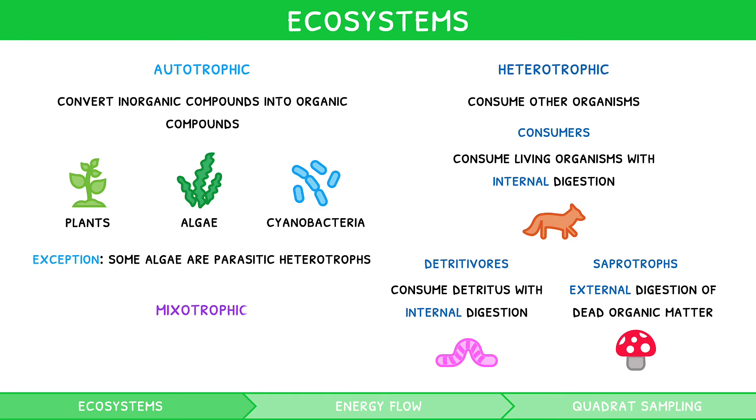Mixotrophic species, as the name indicates, can carry out both heterotrophic and autotrophic nutrition. An example is a Venus flytrap.